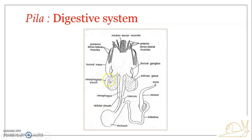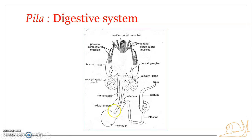Among the digestive glands, one is the esophageal pouch, another is a buccal ganglion associated with the buccal cavity, then a set of salivary glands also associated with the buccal cavity, and as already mentioned there is a digestive gland which opens into the stomach at the junction between the pyloric and the cardiac stomach.